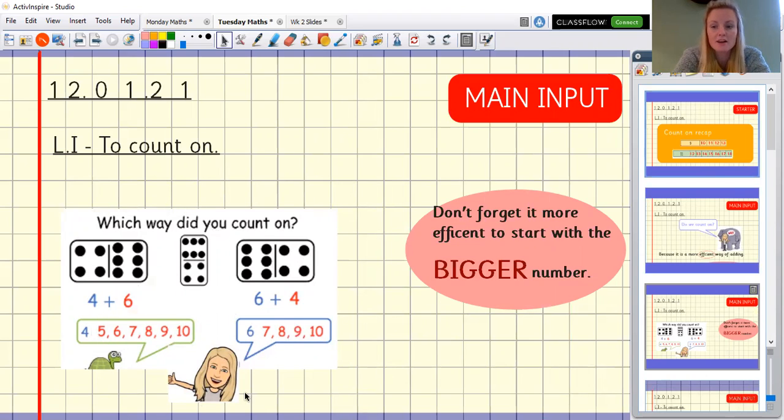That's right. I started with the bigger number. Meaning my way was more efficient because I only had to count on for four rather than six. And that would have been a lot quicker. And because there was only four compared to six, probably more likely that I wouldn't make mistakes because there's less steps to take.